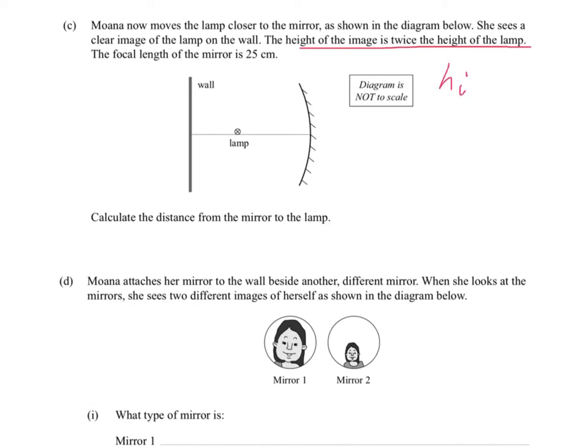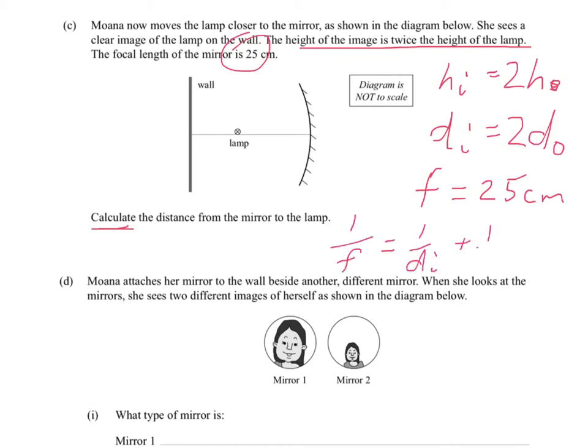So the height of the image is 2 times HO we'll call it. And that also tells us something about the distance. I can see there's a calculation coming up. So we'll write this down as well. The distance to the image is going to be twice the distance to the object from the mirror, that is. So let's carry on. Let's say the focal length of the mirror is 25 centimeters. So we're being set up here for a nice 1 over F equals 1 over DI plus 1 over DO calculation.